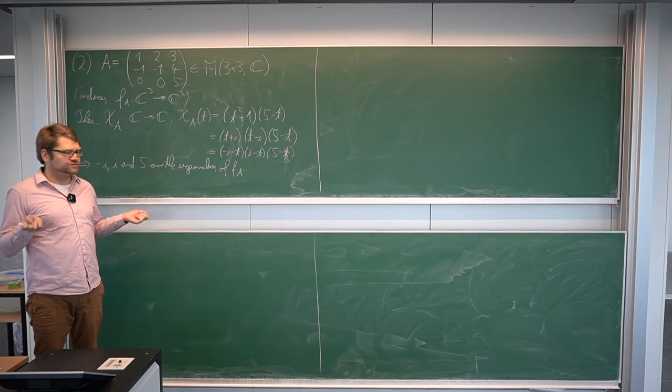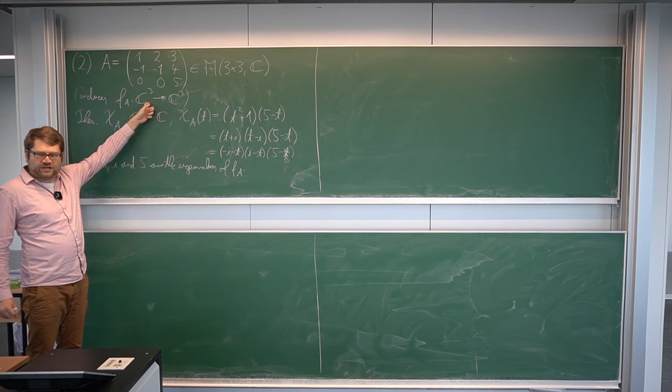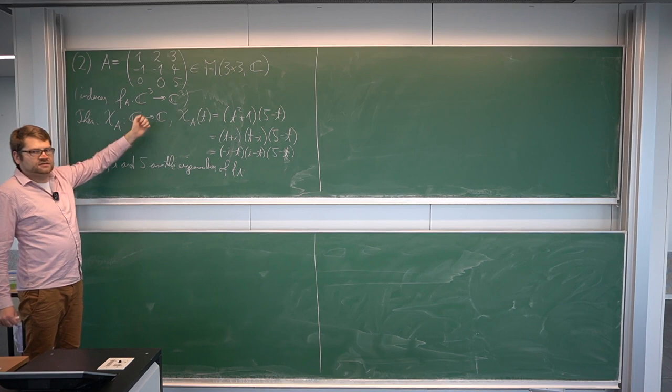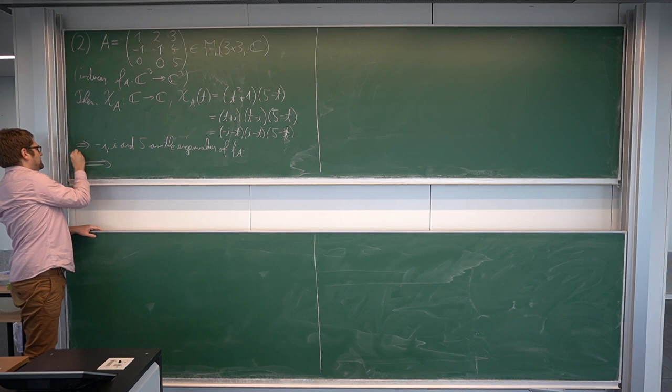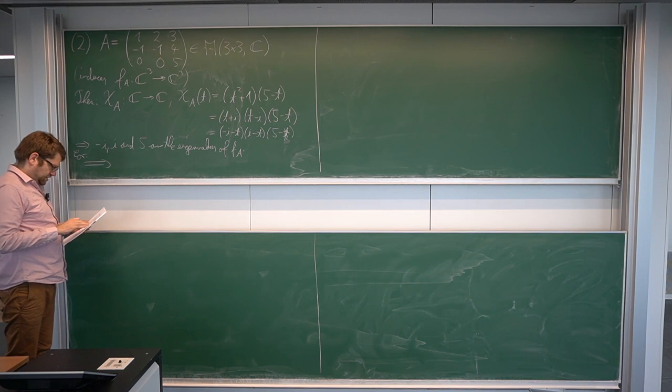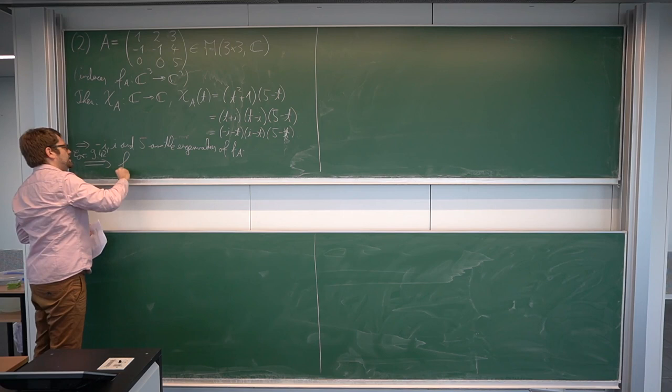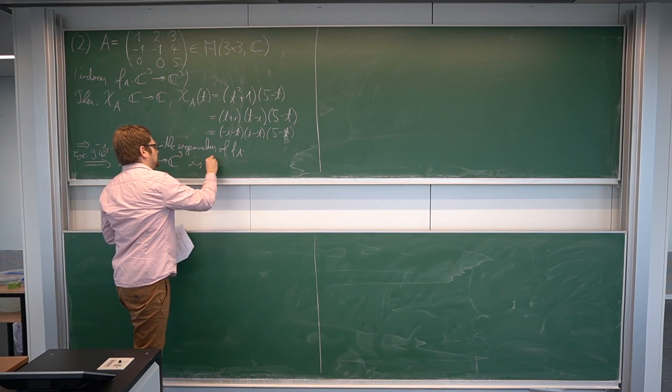Why is it diagonalizable? It's the same argument we used in the real case before: we have three different eigenvalues, and the space has dimension three over the field k. Three distinct pairwise distinct eigenvalues in a three-dimensional space — so it's time for corollary 9.42. The corresponding complex endomorphism f_A is diagonalizable.